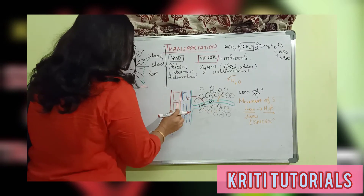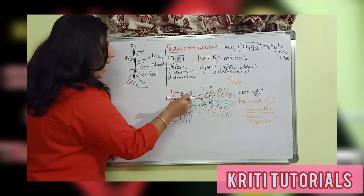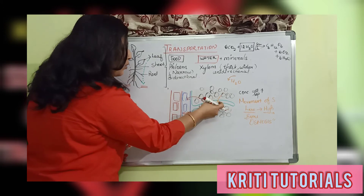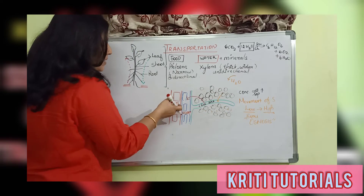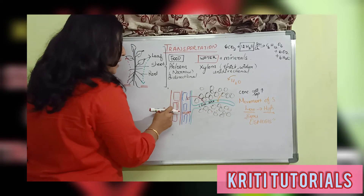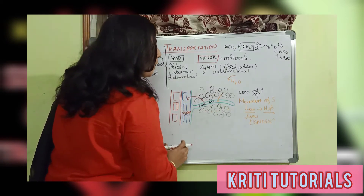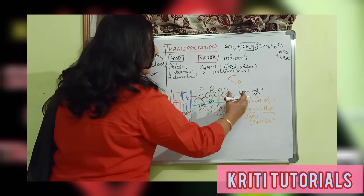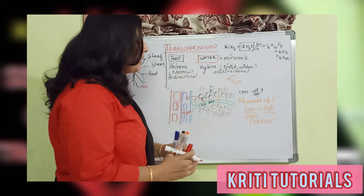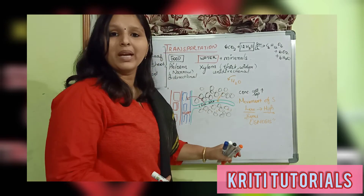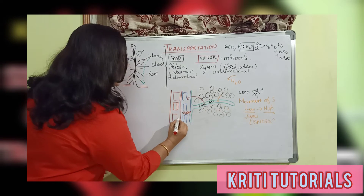Again, coming to the primary root, the cell sap concentration will be more. As this part is being diluted by the solution present in the tertiary root, this also becomes diluted. So this is a chain phenomenon: movement of substances from lower concentration to higher concentration by means of a semi-permeable membrane, which is called osmosis.